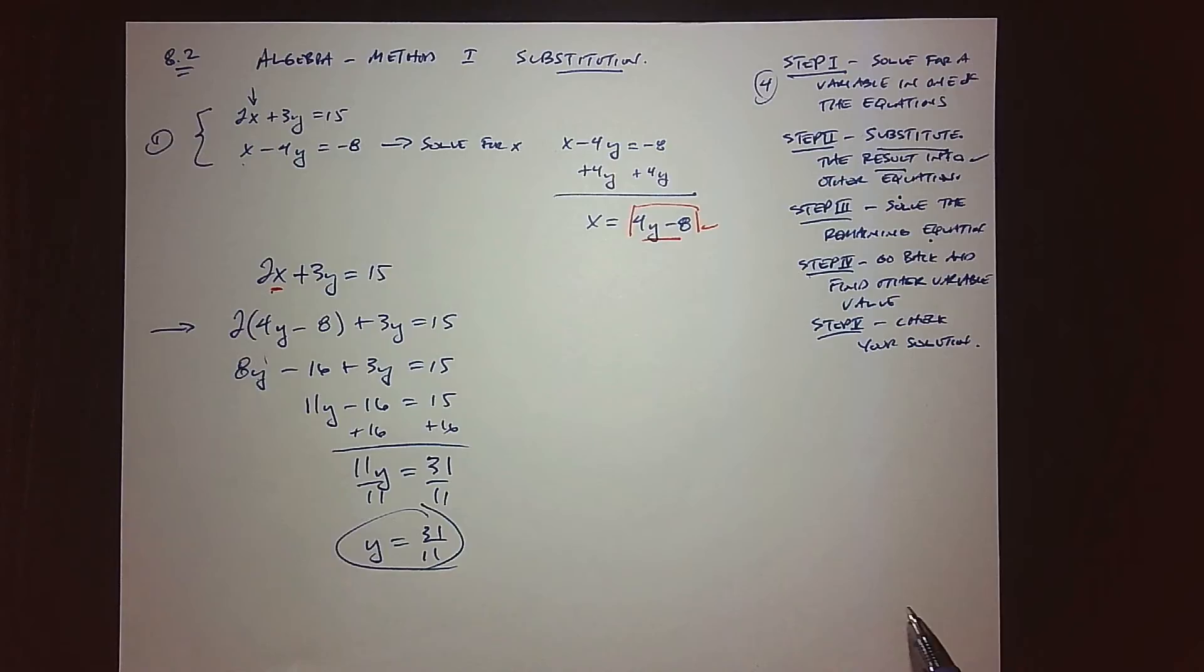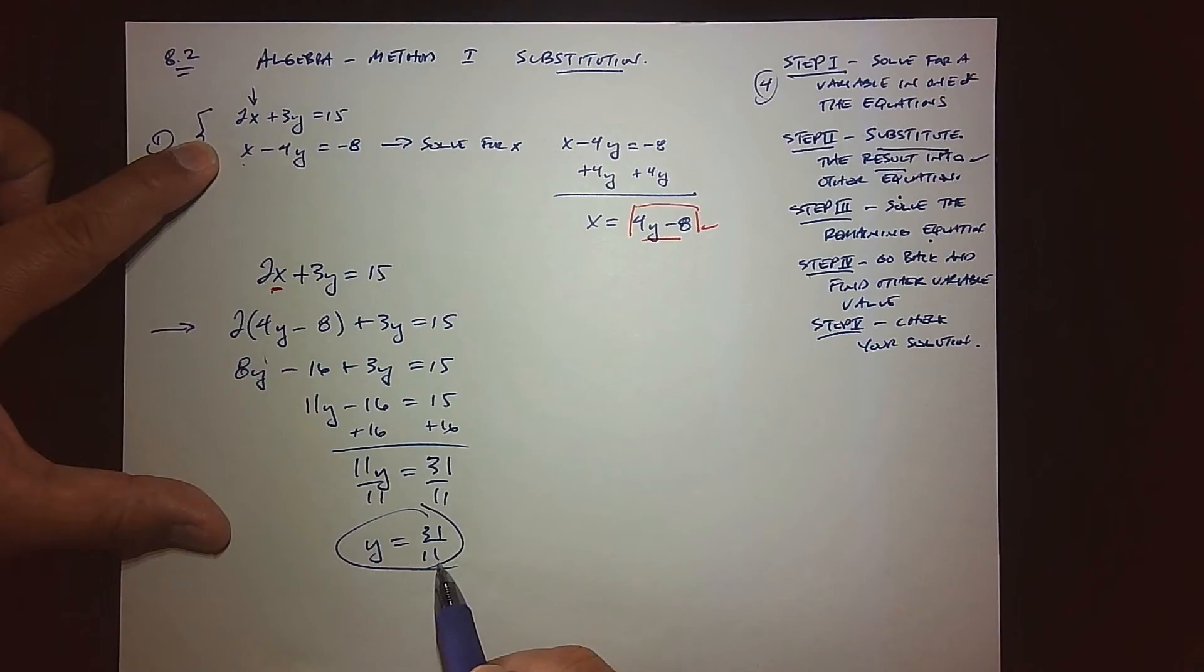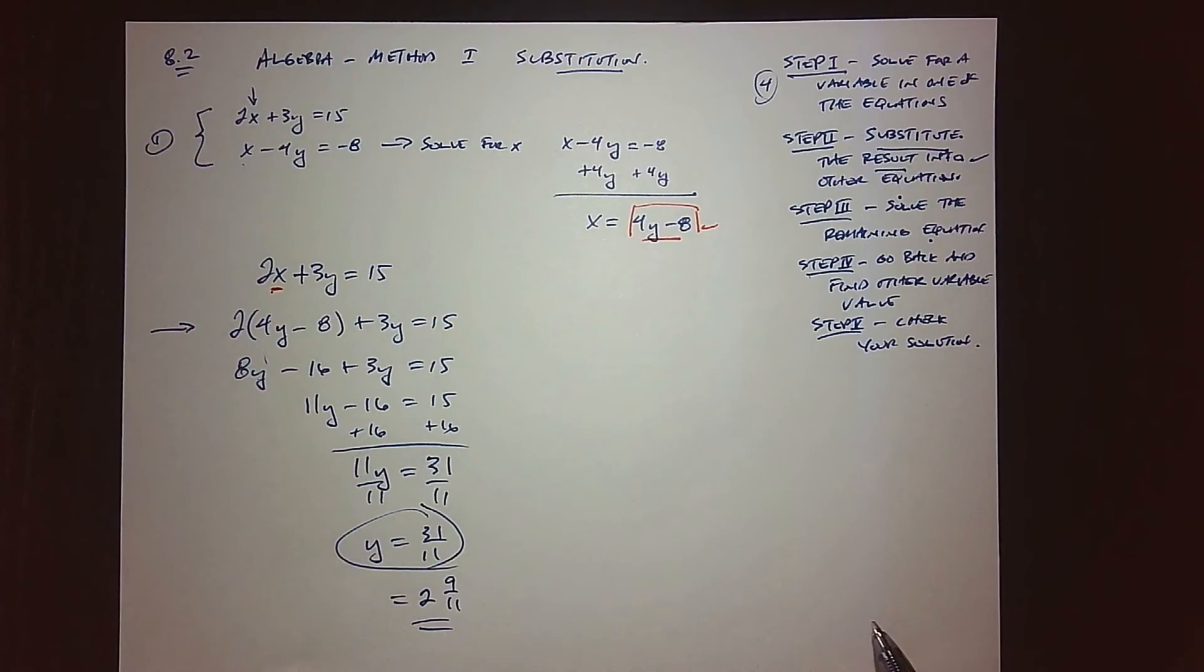We can see why we were having such a hard time. This system is the one I introduced graphically. The y-coordinate is a really crazy number: 31 over 11, which is roughly 2 and 9/11. That is a pretty crazy y-coordinate that we were having trouble seeing when we were solving this.